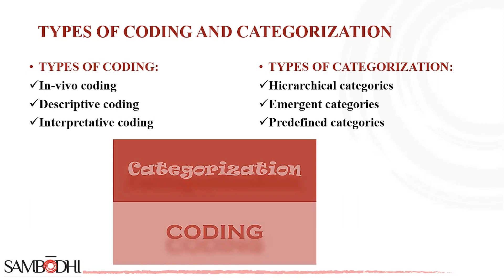Another characteristic is the theoretical framework — predefined categories are often grounded in existing theoretical frameworks or prior research findings, making it easier to compare and build upon previous studies. They also offer conceptual clarity, as predefined categories are well-defined and specific, allowing for systematic and focused analysis. Additionally, they are aligned with the research objectives and specific research questions. Finally, they facilitate comparison, enabling researchers to compare findings across different studies that use similar concepts or themes.